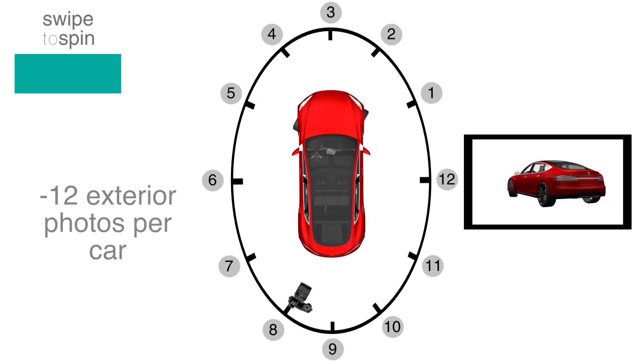You will need to take precisely 12 exterior photos for every car in order for swipe to spin to generate its 360 spin. This is key.